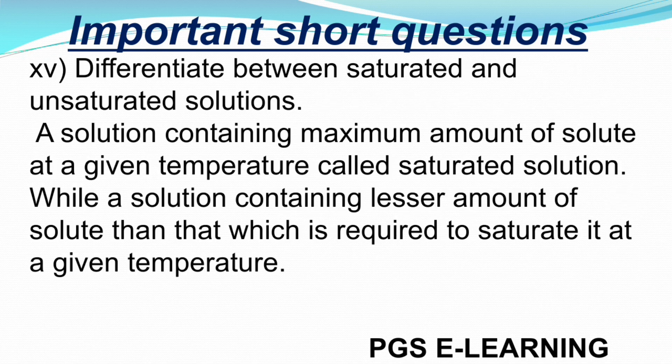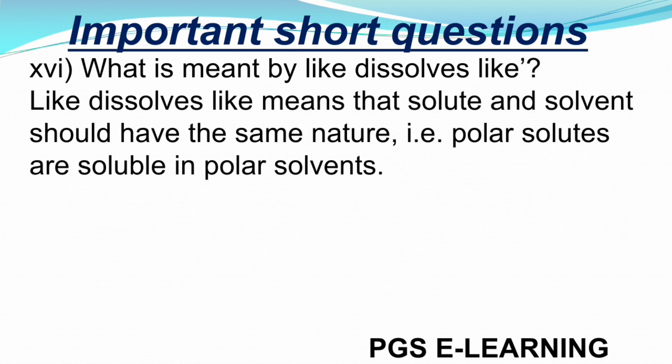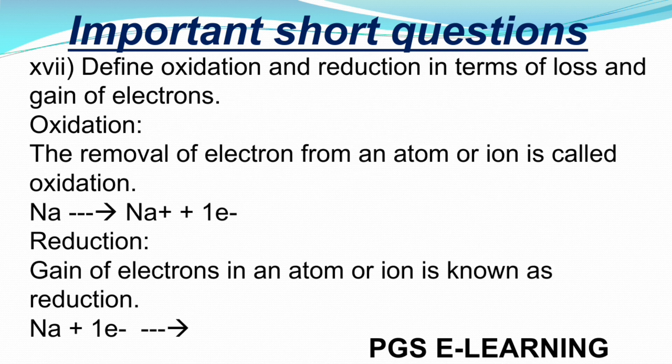Question 15: Differentiate between saturated and unsaturated solution. A solution containing the maximum amount of solute is known as a saturated solution, and a solution with a lesser amount is known as an unsaturated solution. Question 16: What is meant by 'like dissolves like'? It means that solute and solvent should have the same nature — polar solutes are soluble in polar solvents. Question 17: Define oxidation and reduction in terms of loss and gain of electrons. The removal of electrons from an atom or ion is called oxidation; the gain of electrons by any atom or ion is known as reduction. The equations are as follows.